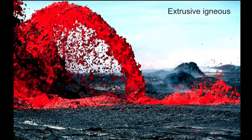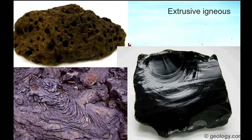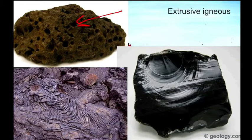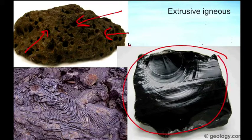Here's an example of extrusive igneous rock forming — lava erupting at the surface and cooling. It could be ash also that cools to form extrusive igneous rocks. Extrusive igneous rocks all look a little different depending on how they formed. Some form so quickly that they show air bubbles and gas bubbles in them as they cooled. Others look quite different, like obsidian glass, which is a type of extrusive igneous rock.